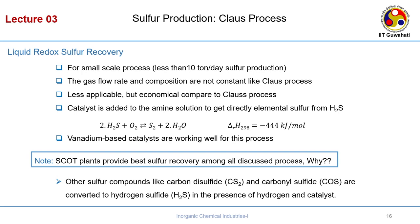The liquid redox sulphur recovery process is used for small-scale processes — less than 10 tons per day sulphur production. Gas flow rate and composition are not constant here as in the Claus process, so the Claus process is less applicable, but liquid redox is economical compared to it. Here, a catalyst is added to the amine solution to directly obtain elemental sulphur from H2S: 2H2S + O2 → elemental sulphur + water. Vanadium-based catalysts can be used in this liquid redox sulphur recovery.